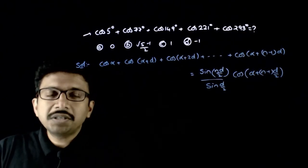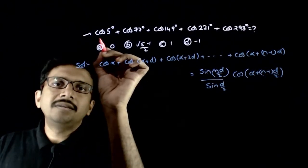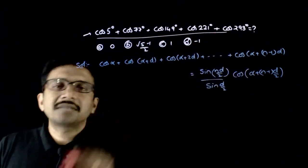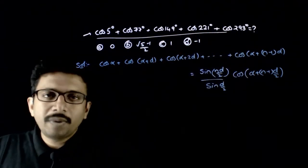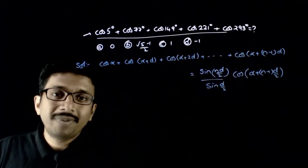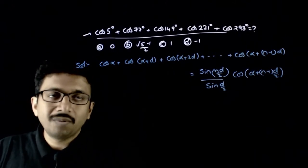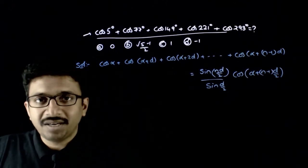Welcome students. In this question, you are asked to find the sum of this series: cos 5 degrees plus cos 77 degrees plus cos 149 degrees plus cos 221 degrees plus cos 293 degrees.